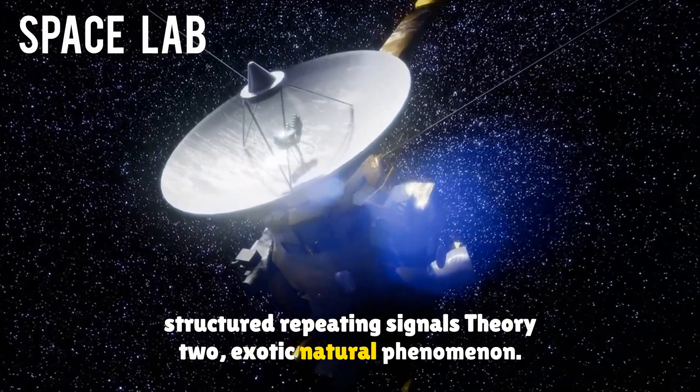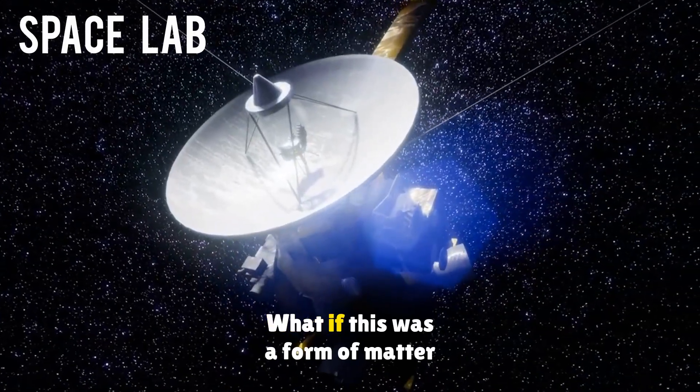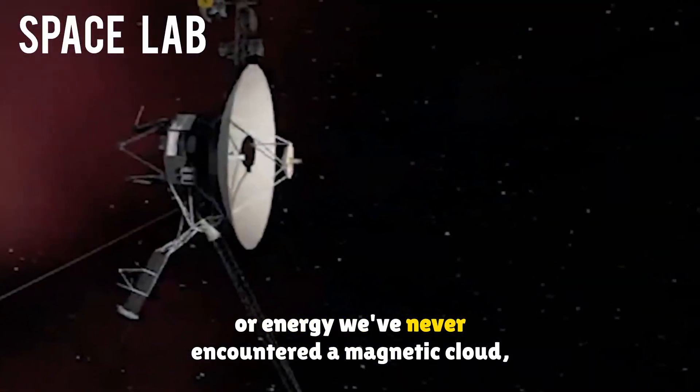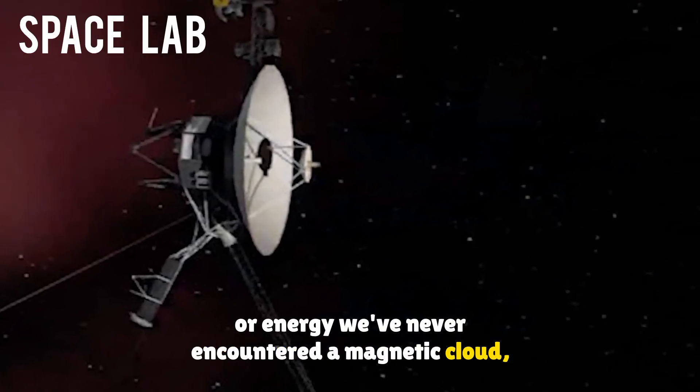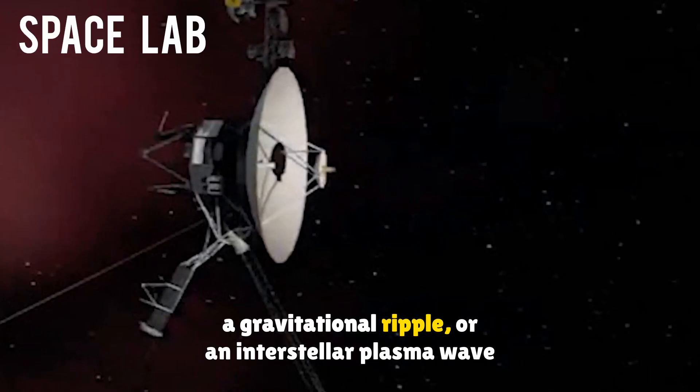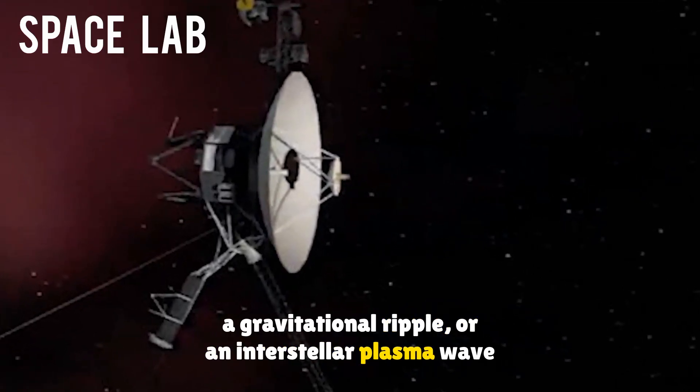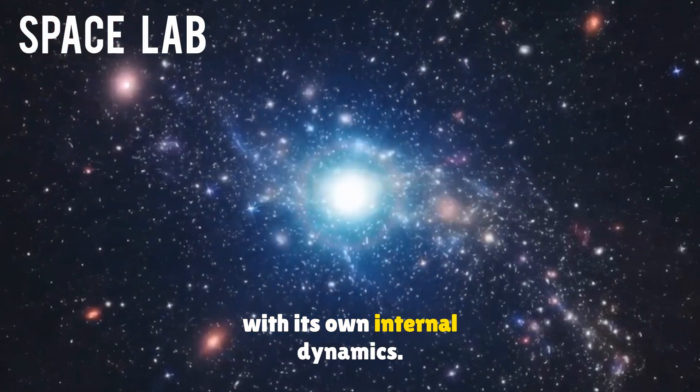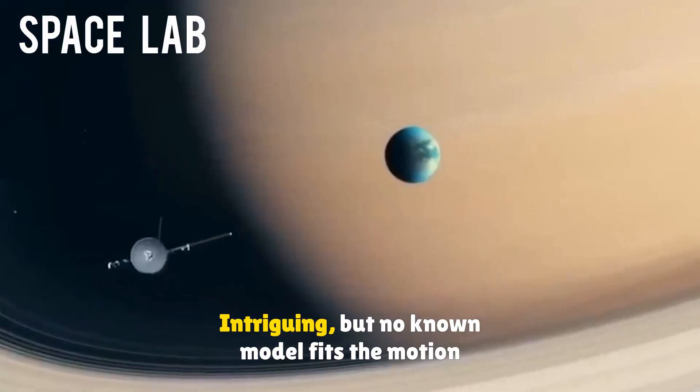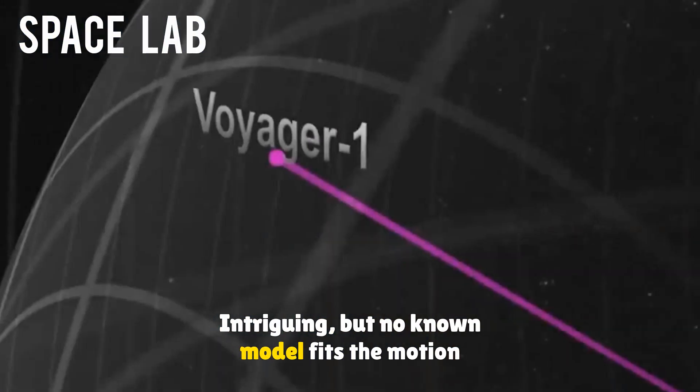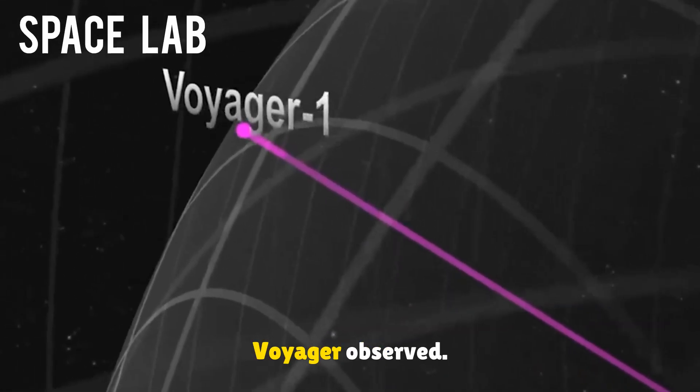Theory 2: Exotic natural phenomenon. What if this was a form of matter or energy we've never encountered? A magnetic cloud, a gravitational ripple, or an interstellar plasma wave with its own internal dynamics? Intriguing, but no known model fits the motion Voyager observed.